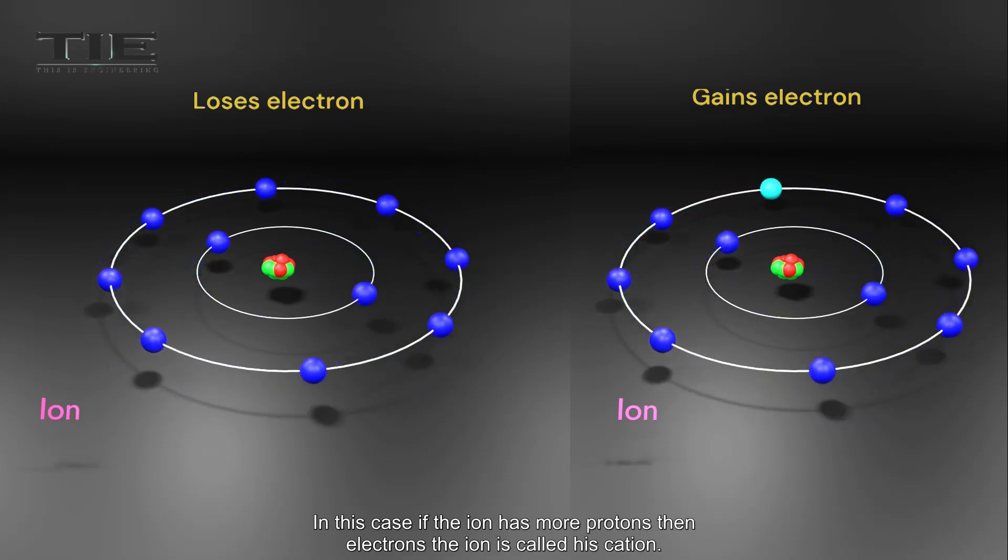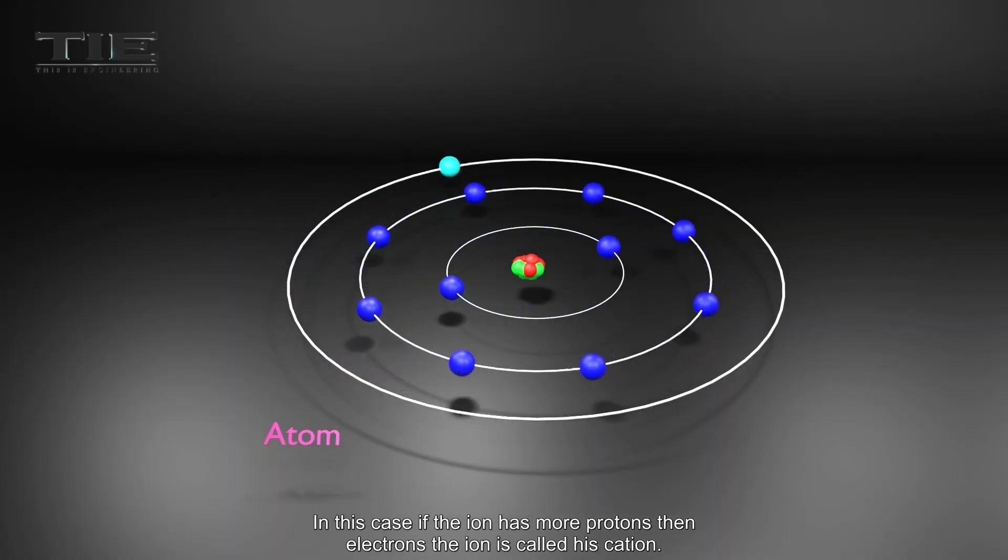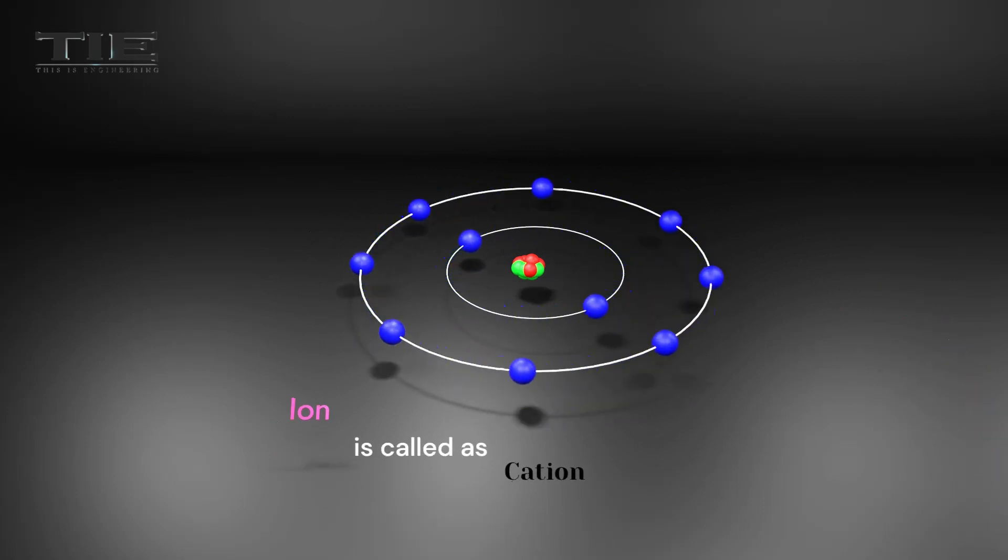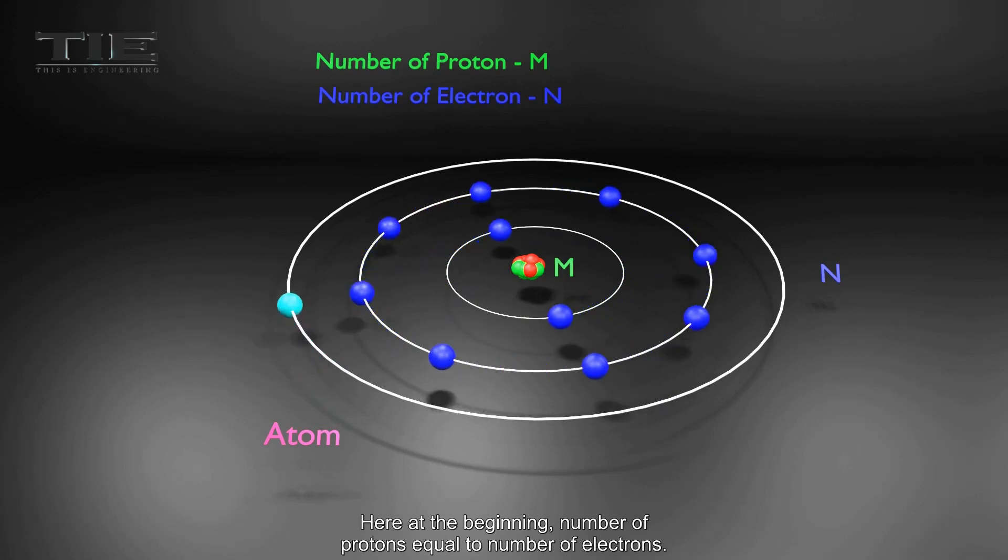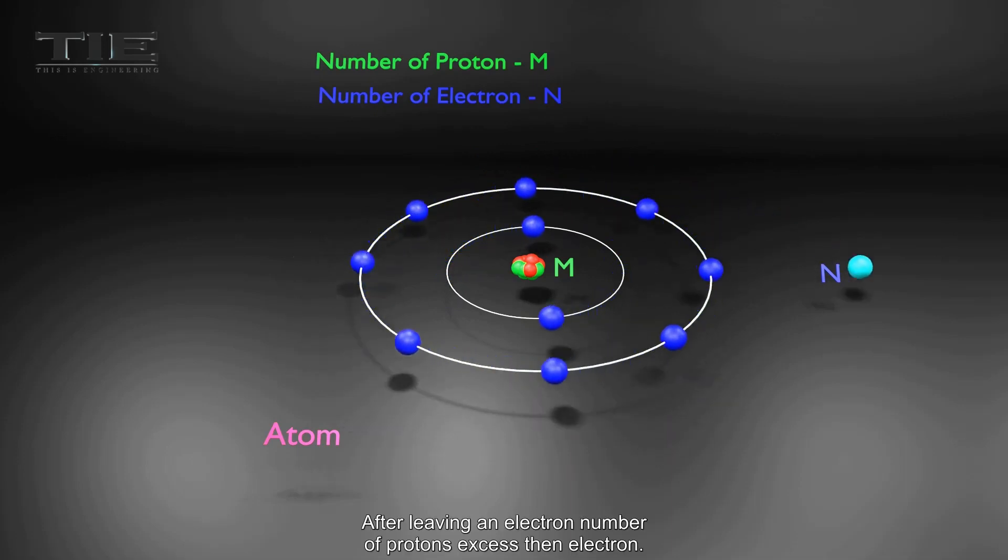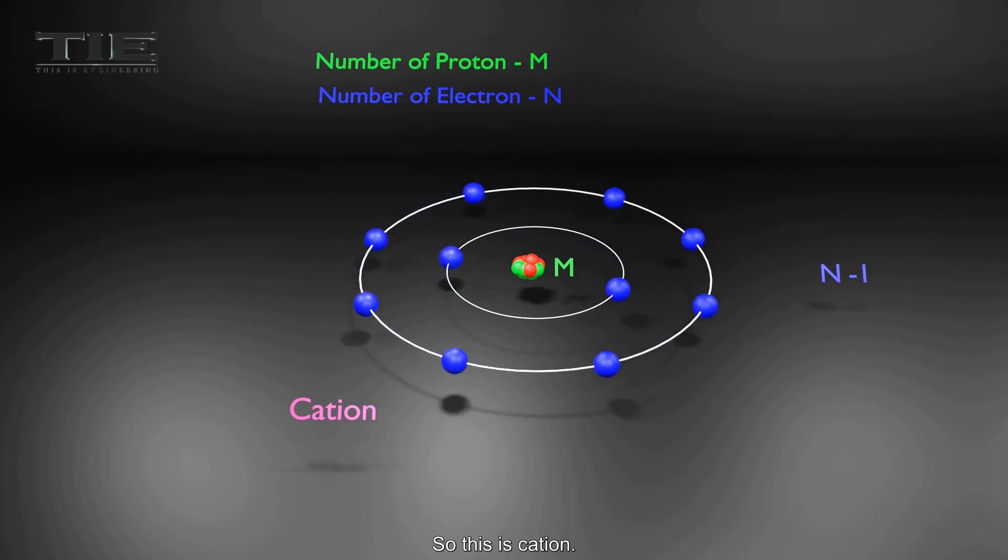In this case, if the ion has more protons than electrons, the ion is called a cation. Here, at the beginning, number of protons equals number of electrons. After leaving an electron, number of protons exceeds electrons. So this is a cation.